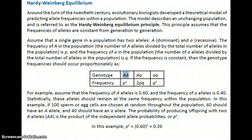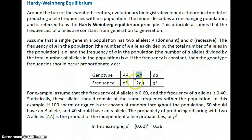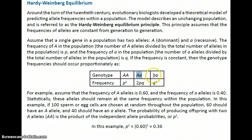Homozygous dominant is big A big A; homozygous recessive is little a little a; heterozygous is big A little a. Both the homozygous dominant and the heterozygous zygote are going to look the same because they have big A in the genotype. Homo means same, hetero means different, and zygous refers to the zygote. One allele comes from mom and one from dad, combining during fertilization to produce a zygote.